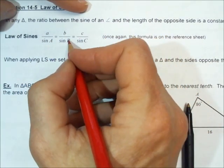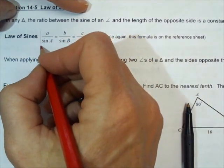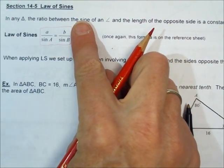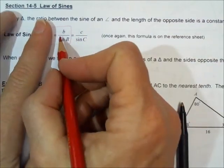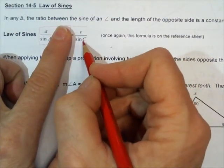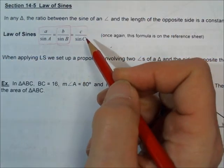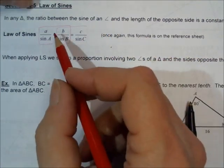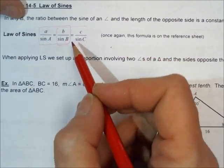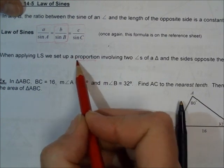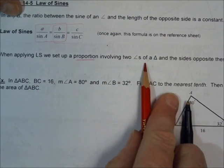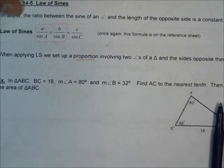So if you know little a, big A, and little b, and you're asked to find big B, you're only going to be using two of these parts — you don't use all three. You set up an equation with whichever two pairs you have. When applying the law of sines, we set up a proportion — two fractions equal to each other — involving two angles of a triangle and the sides opposite those angles.